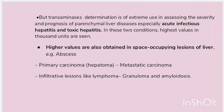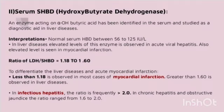Serum hydroxybutyrate dehydrogenase is an enzyme acting on alpha-hydroxybutyric acid and has been identified in serum as a diagnostic aid in liver disease. The normal serum hydroxybutyrate dehydrogenase range is 56 to 125 international units per liter. Elevated levels of this enzyme are observed in acute viral hepatitis, and also elevated in myocardial infarction. The ratio of LDH to SHBD is 1.18 to 1.60.